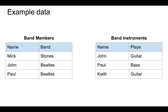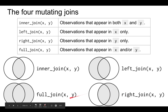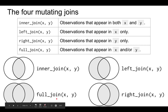We'll be working with these two example data frames: band members and band instruments. The four mutating joins are shown in the table and using the Venn diagrams below. An inner join keeps observations that appear in both x and y — so this is similar to intersection. A left join keeps observations in x, a right join keeps observations in y, and a full join keeps observations in x or y, which in set notation would be called x union y.